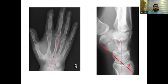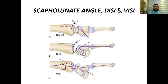On the left side, there is the carpal height ratio, and on the right side, the scapholunate angle. The normal scapholunate angle is between 30 to 60 degrees. If it is more than 80 degrees, pathology is present — that is a D-PISI deformity. And if it is less than 30 degrees, then it is a V-PISI deformity of the wrist.